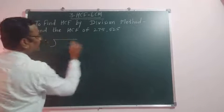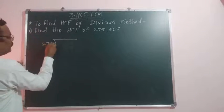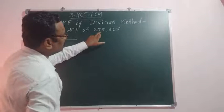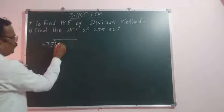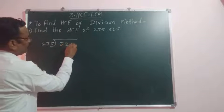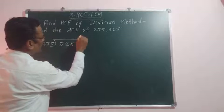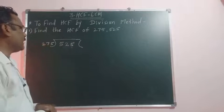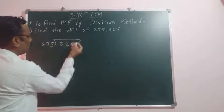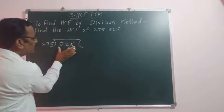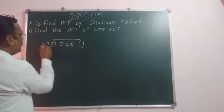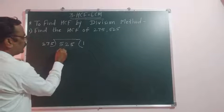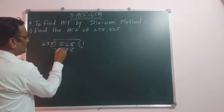Here the smaller number is 275. The bigger number is 525. So divide here, 525 by 275. 275 ones are 275. Subtract it.